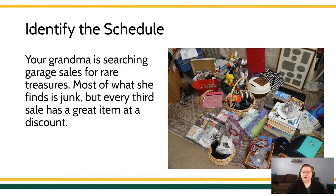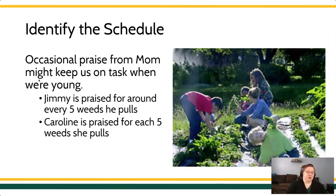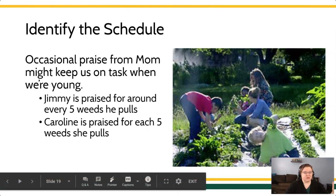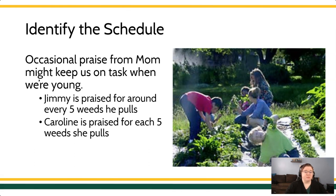Let's do one that's a little more difficult. What about these two kids? Occasional praise from mom might keep them on track when helping in the garden. Jimmy is praised for about every five weeds; Carolyn is praised for every five weeds. Jimmy earns praise around every five on average, which means we're probably looking at a variable ratio five — sometimes he earns the reinforcer every third, sometimes every eighth, but on average it's about five. Carolyn, however, gets it every five, which means she's on a fixed ratio five.